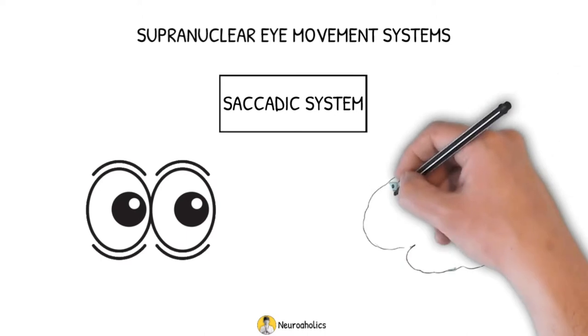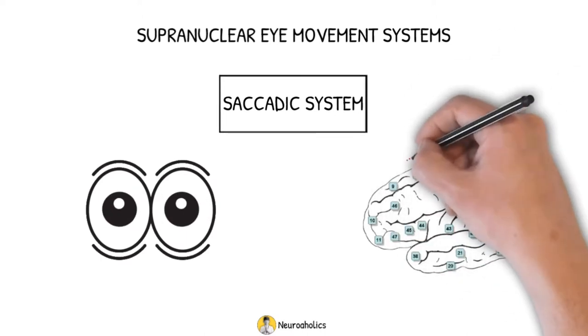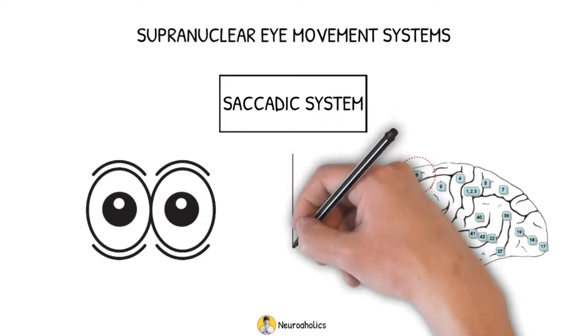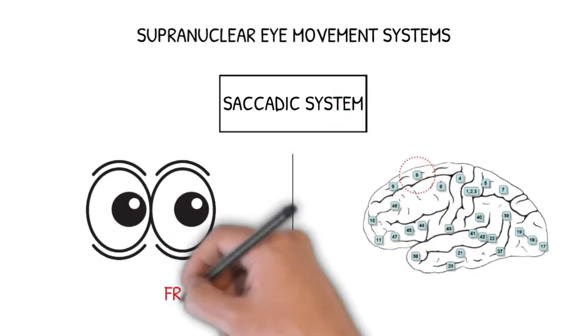The saccadic system originates from the frontal lobe of the brain, area 8. The impulses then move to the mesencephalic system, and so the anatomical pathway subserving the fast eye movements is the frontomesencephalic pathway.